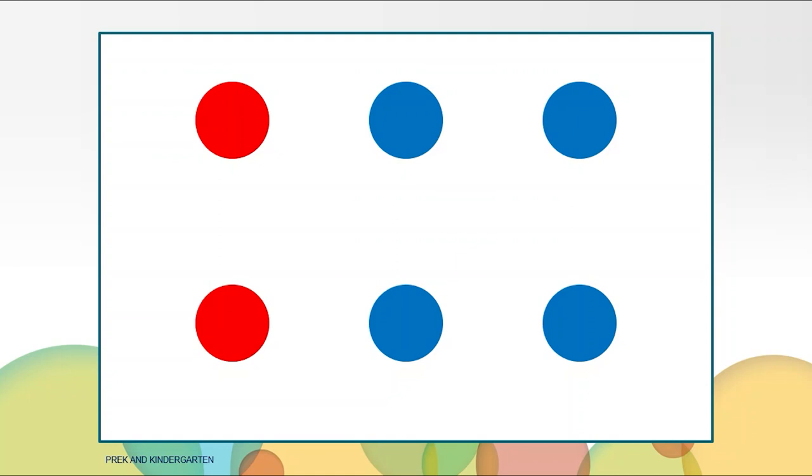Maybe you saw two on the left, two in the middle, and two on the right. That would make six. Maybe you saw three on the top and three on the bottom, which would make six. There are different ways to see a number.